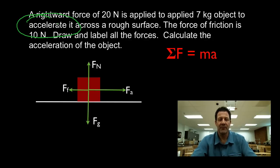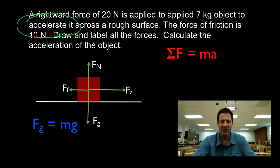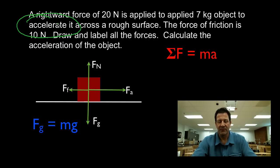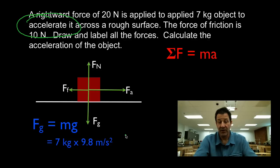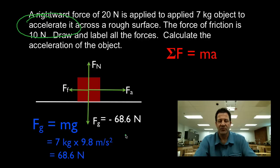We drew the forces, labeled them, now we're going to calculate them. The first one is the force due to gravity. We use a special form of the F equals MA equation, which basically says F equals MG, G being the acceleration due to gravity. We calculate the weight force using the acceleration due to gravity, which is 9.8 meters per second squared. So F equals MG: 7 kilograms times 9.8 meters per second squared gives us 68.6 Newtons. We write it as negative because it's a downward force — we assume downwards is the negative direction.